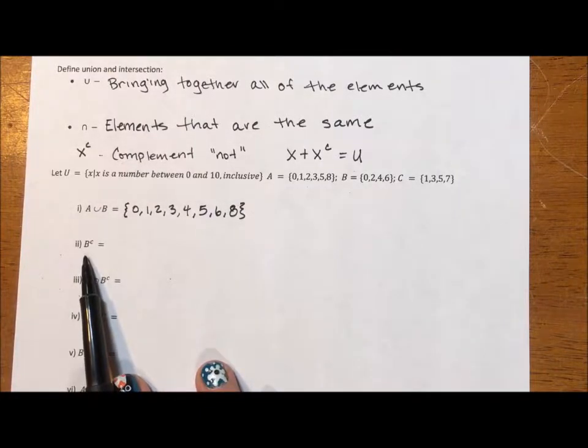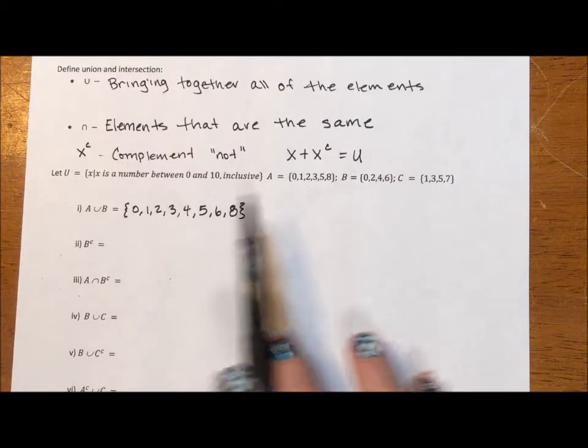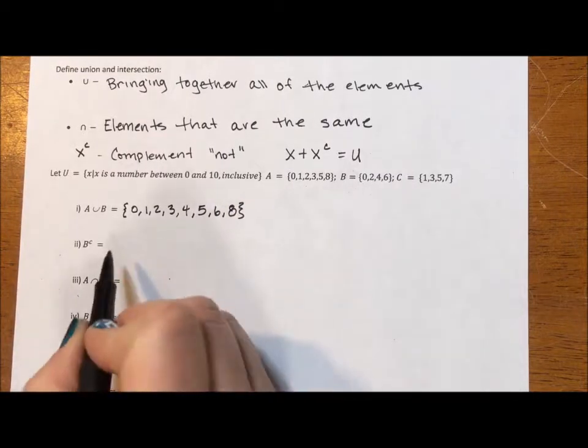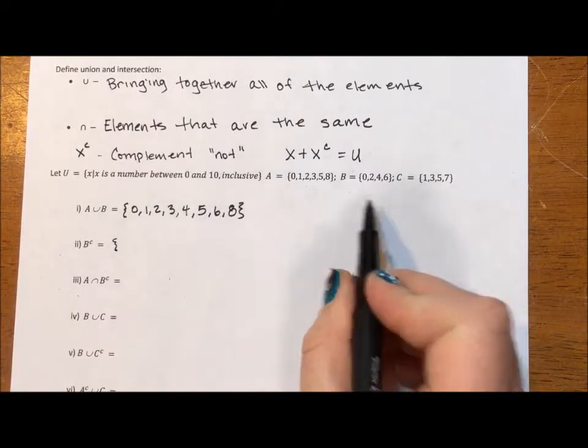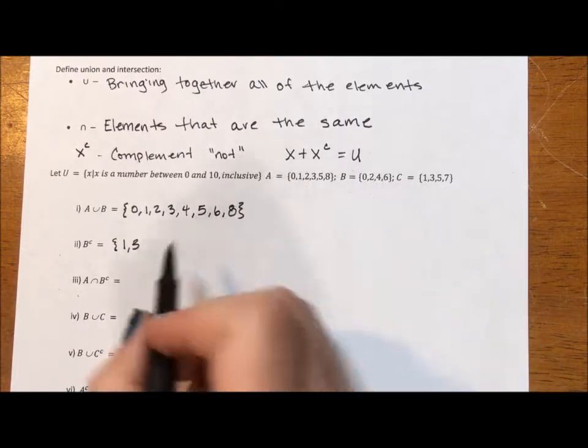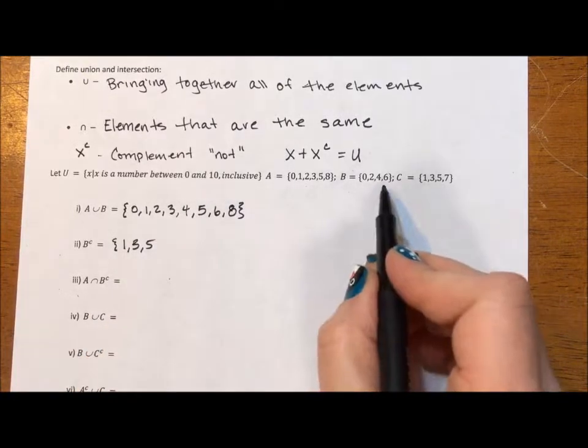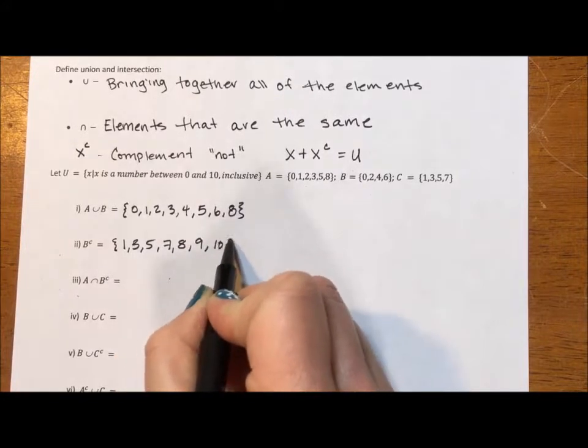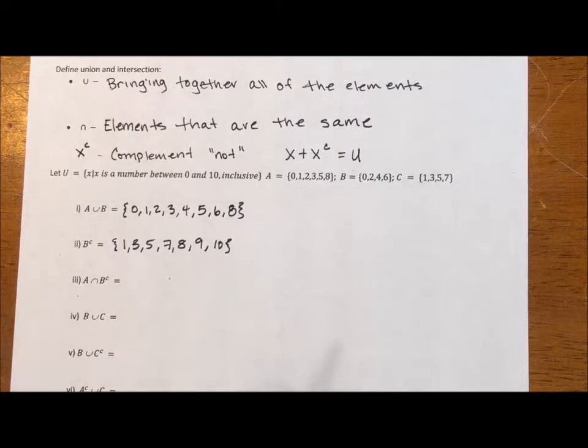This says what is the complement of B. So that means what elements are in the universe but not in B. So 0, 1, 2, 3, 4, 5, 6, 7, 8, 9, 10.